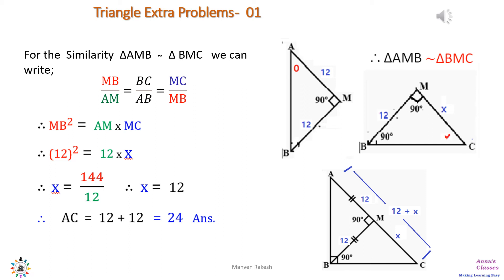Now because triangle AMB is similar to triangle BMC, we can write down MB upon AM equals BC upon AB equals MC upon MB. Considering first and the last term, we can write MB square equals AM times MC.